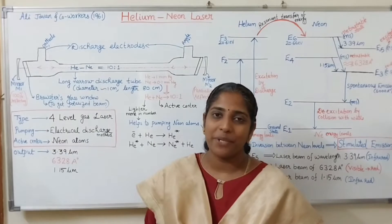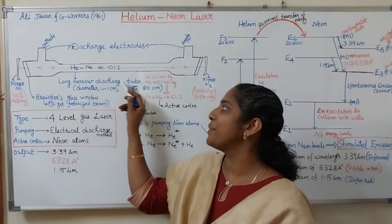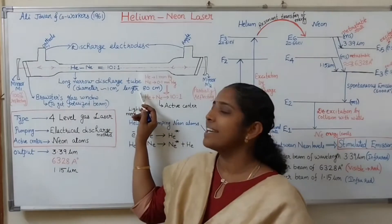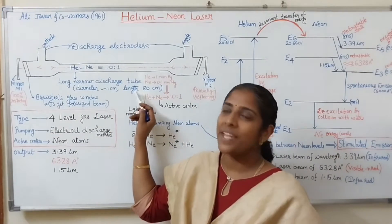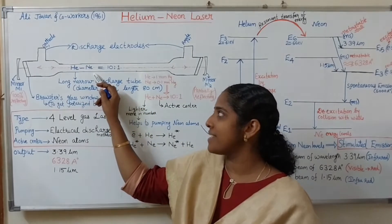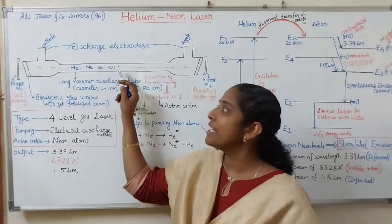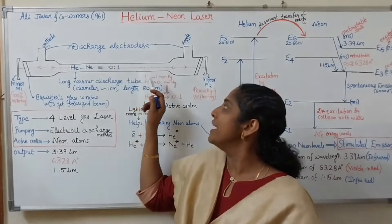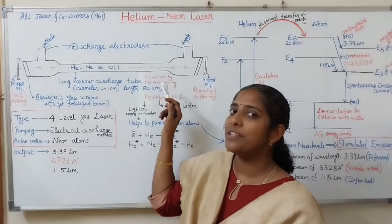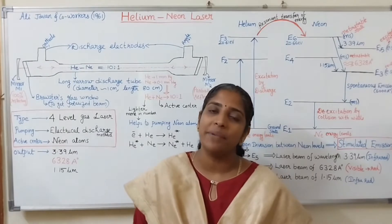Now we can see the construction of helium-neon laser. It consists of a long narrow discharge tube of diameter about 1 cm and length about 80 cm. It is filled with helium and neon gas atoms in the ratio 10:1. To get that 10:1 ratio, helium is filled at a pressure of 1 mm of mercury and neon is filled at a pressure of 0.1 mm of mercury.